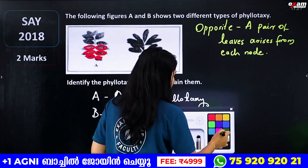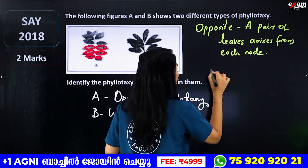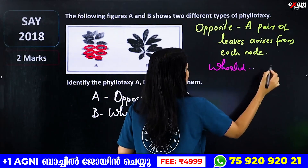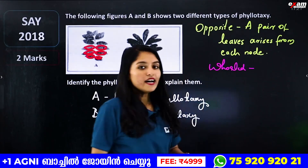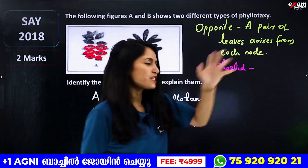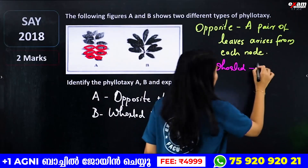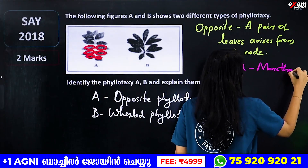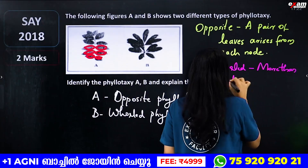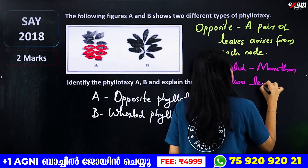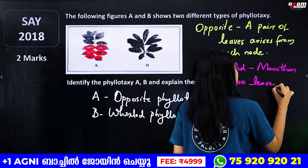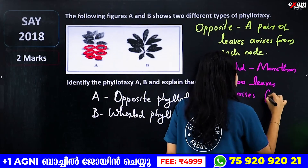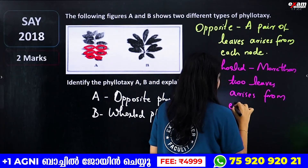What is the whorled phyllotaxy? More than two leaves arise from each node.